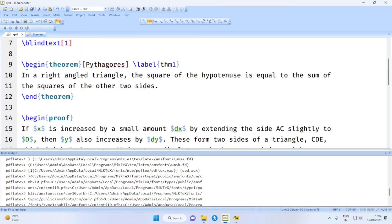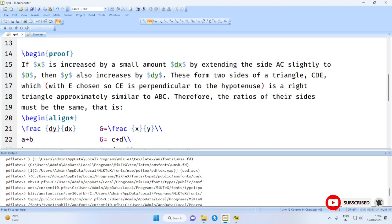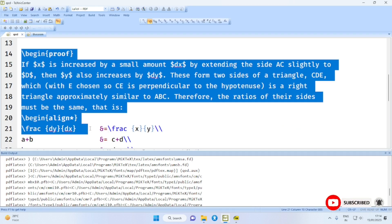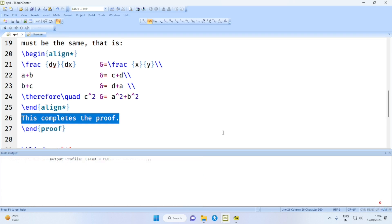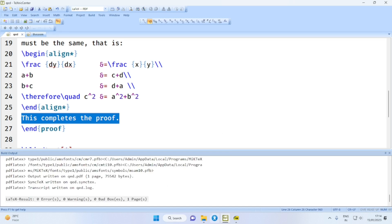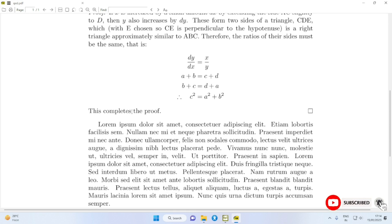This file contains a theorem and it is followed by a proof. Let's say after the align environment, which forms part of the proof, we have the statement 'this completes the proof.' On compilation you will find the statement 'this completes the proof' and the QED symbol here at the right extreme of the page.